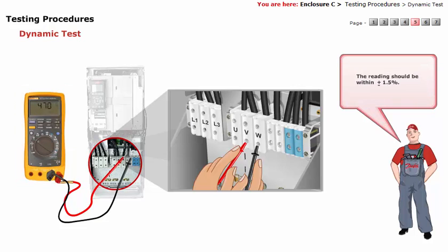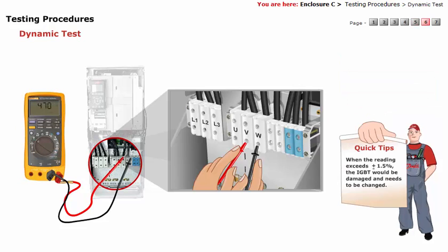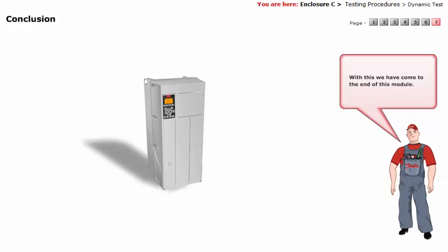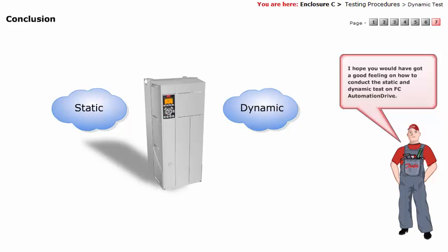The reading should be within plus or minus 1.5 percent. When the reading exceeds plus or minus 1.5 percent, the IGBT would be damaged and needs to be changed. With this, we have come to the end of this module. I hope you would have got a good understanding of how to conduct the static and dynamic test on FC Automation Drive.